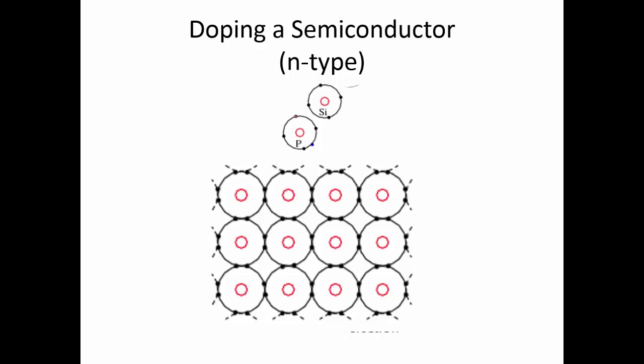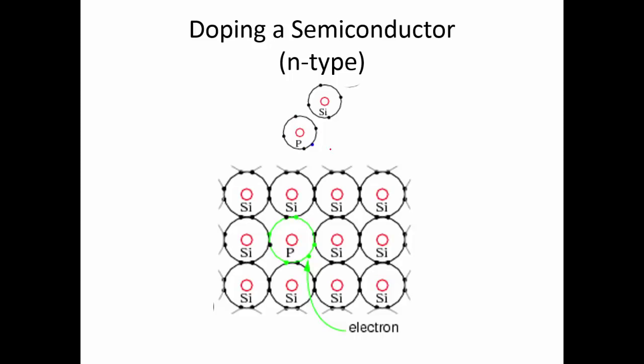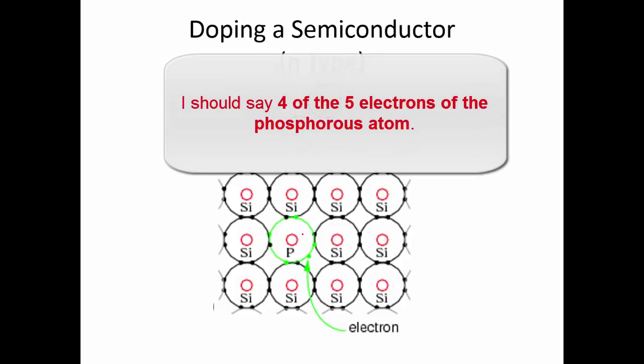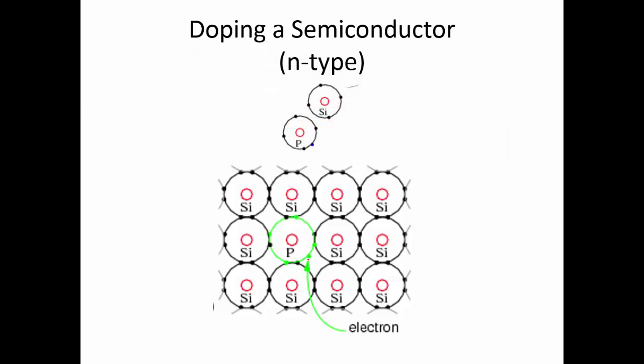The interesting thing about a phosphorus atom is it has five electrons in its valence shell. So if we replace some of those silicon atoms with phosphorus atoms, four of those five phosphorus valence electrons are going to be shared amongst the silicon neighbors of the phosphorus, but there will be one extra electron. This extra electron, which is not going to be bound to any neighbors, is going to be more or less free — just like that one extra electron in the valence shell of a conductor is free. So as you add these phosphorus impurities with their extra electrons, you end up with a whole bunch of free electrons that increase the conductivity of the semiconductor.